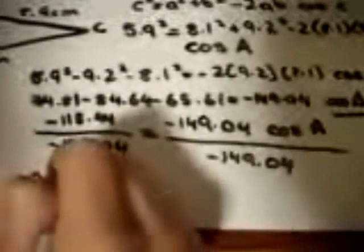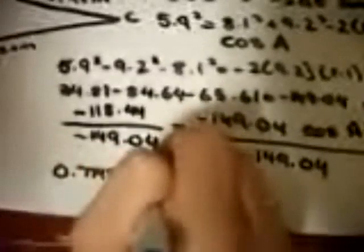We are then left with 0.774557165, which equals cosine A.